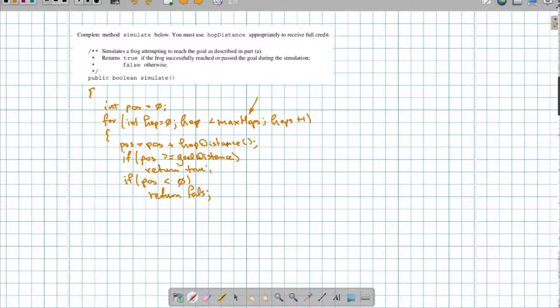But if neither of these things happen, then we're going to keep going until we've done all of our maximum hops. Now, if we reach this point, if we've exited our for loop, then we haven't reached our goal distance. So we're going to return false at this point. And that's the end of our method.